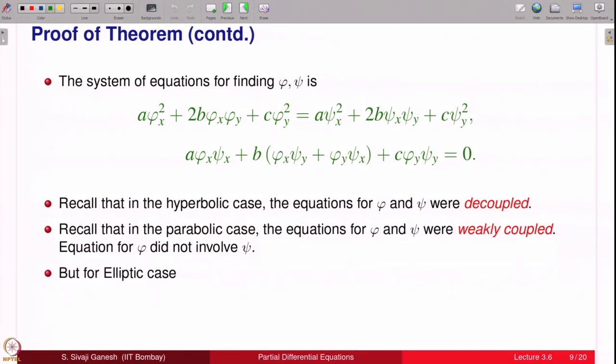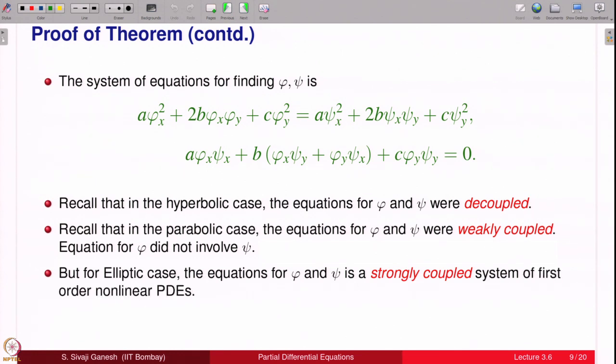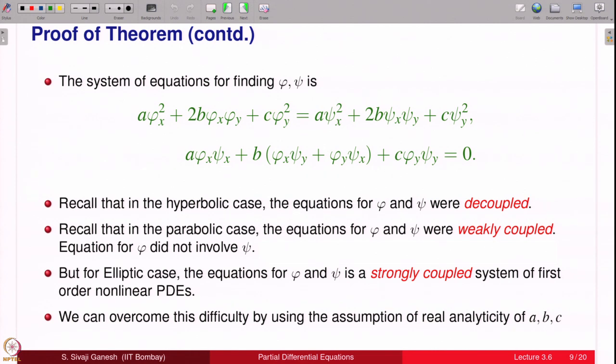But for elliptic equations what is happening? Here also you have φ and ψ mixed, here also you have φ and ψ mixed. Therefore, it is a strongly coupled system for φ and ψ of first order nonlinear PDEs. We can overcome this difficulty by using the assumption of the real analyticity of A, B, C and some complex variable techniques. You will see that a crucial part of the proof we will skip; we will not do the proof.